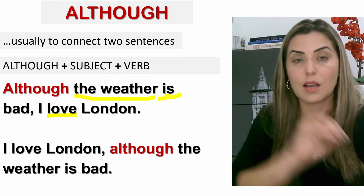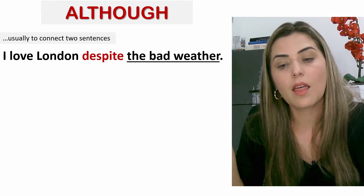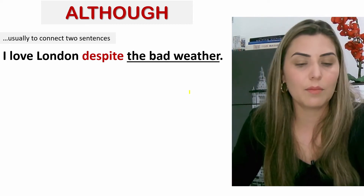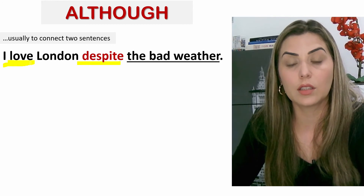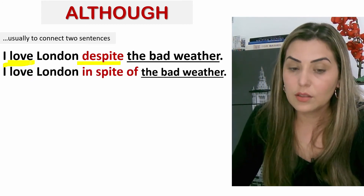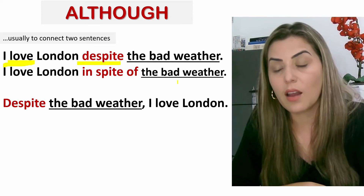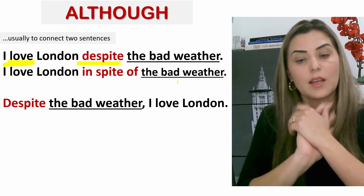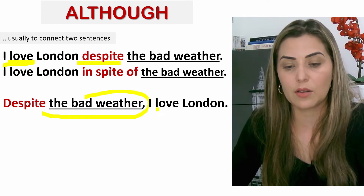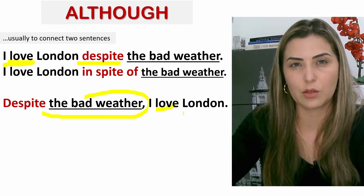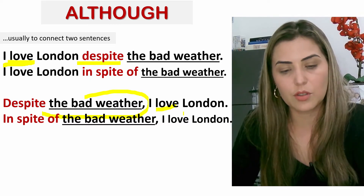Já com 'despite' ou 'in spite of,' você não tem mais um segundo verbo: 'Despite the bad weather, I love London' — só um verbo: 'love.' Mesma situação: 'In spite of the bad weather, I love London.' O mesmo significado, mas agora conectando ideias, não duas sentenças completas.